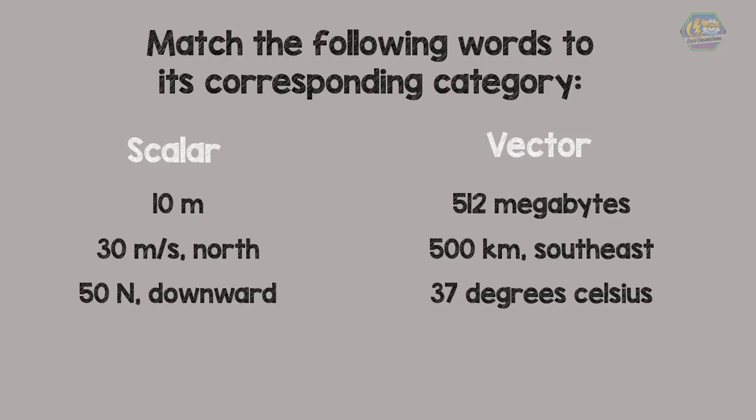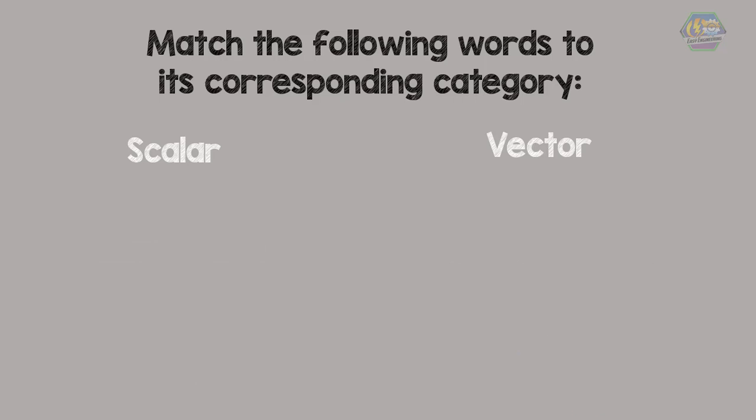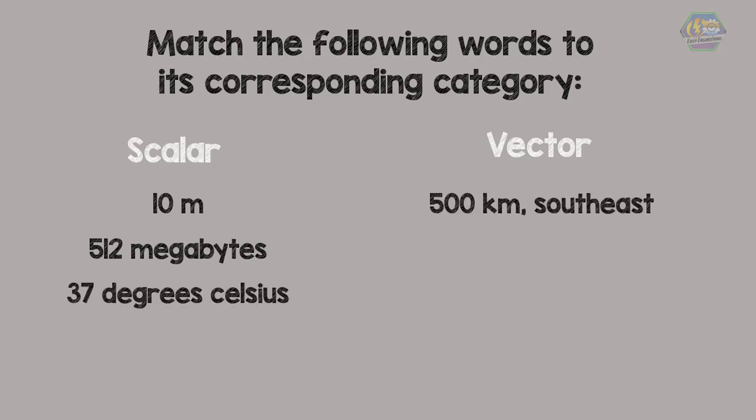Let us check your answer. Under scalar are: 10 meters, 512 megabytes, and 37 degrees Celsius. Under vector are: 500 kilometers southeast, 30 meters per second north, and 50 newtons downward. I hope you got everything right.